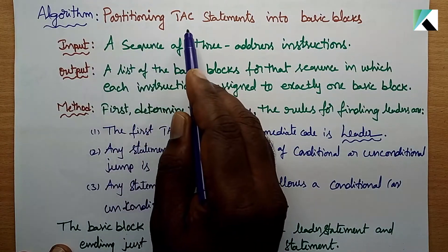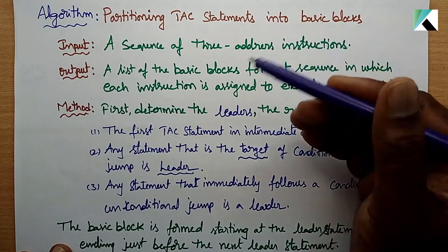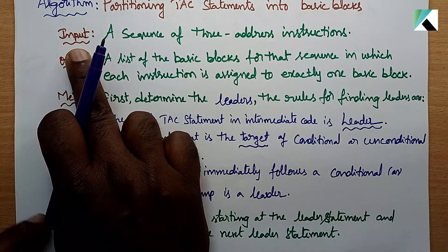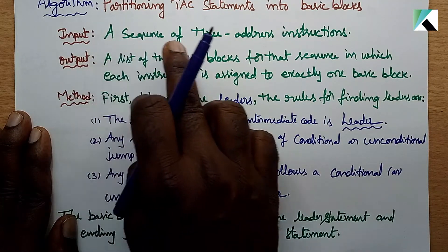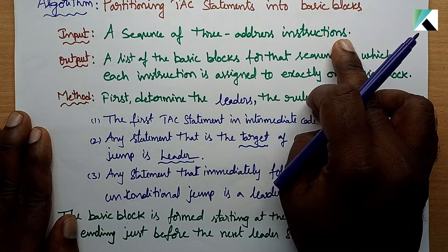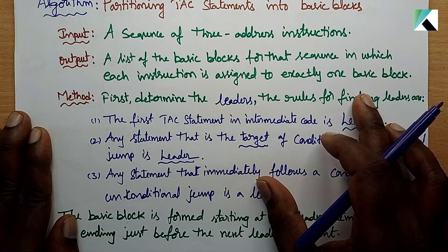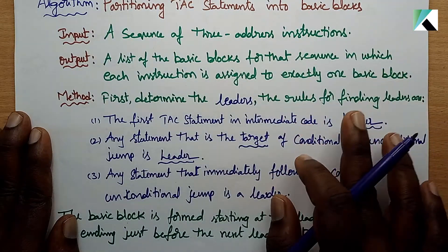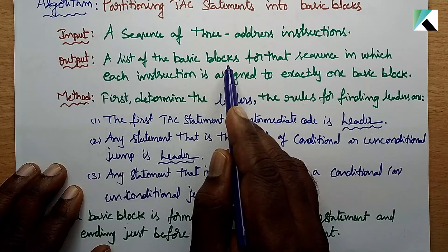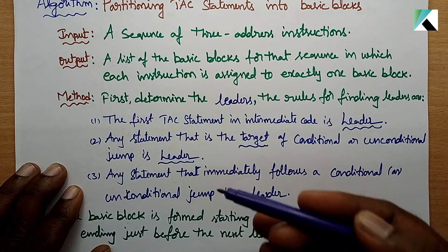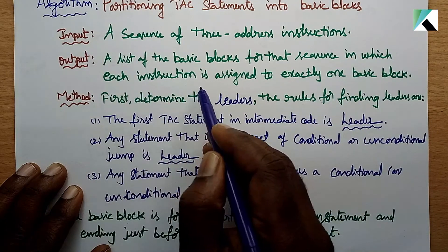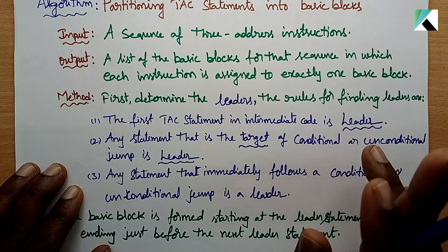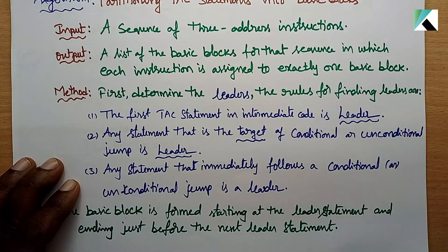An important concept is partitioning TAC statements into Basic Blocks. The input to the flow graph is a sequence of 3-address instructions — we write a high-level program and produce 3-address instructions. The output is a list of basic blocks, where each instruction is assigned to exactly one basic block. The method used is partitioning.